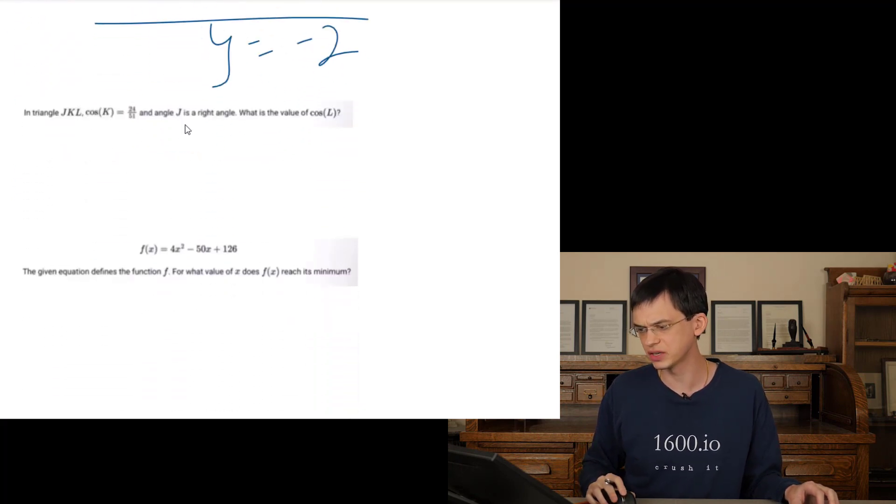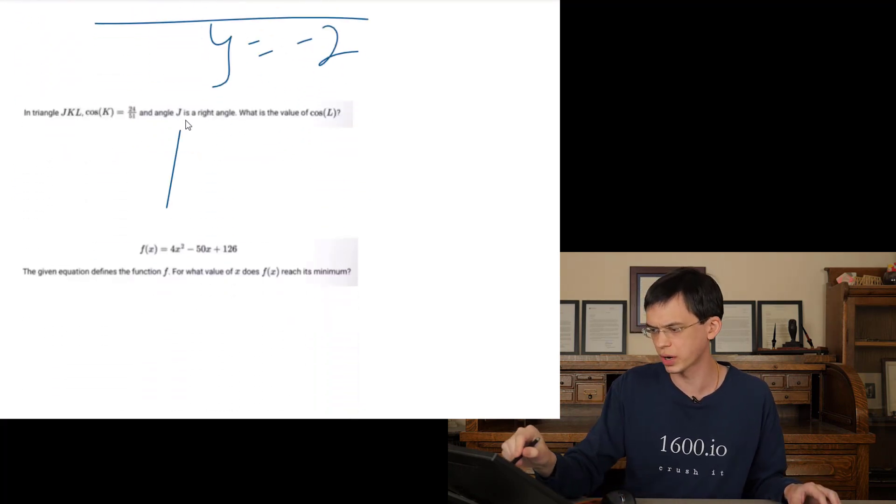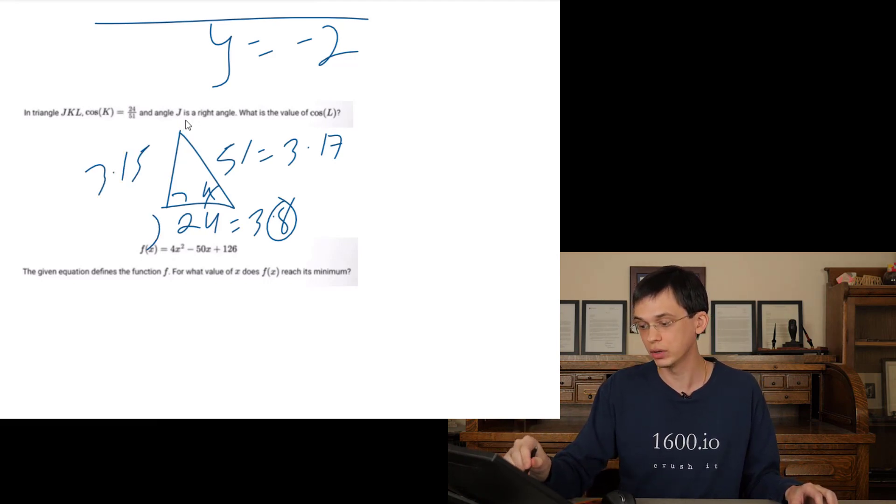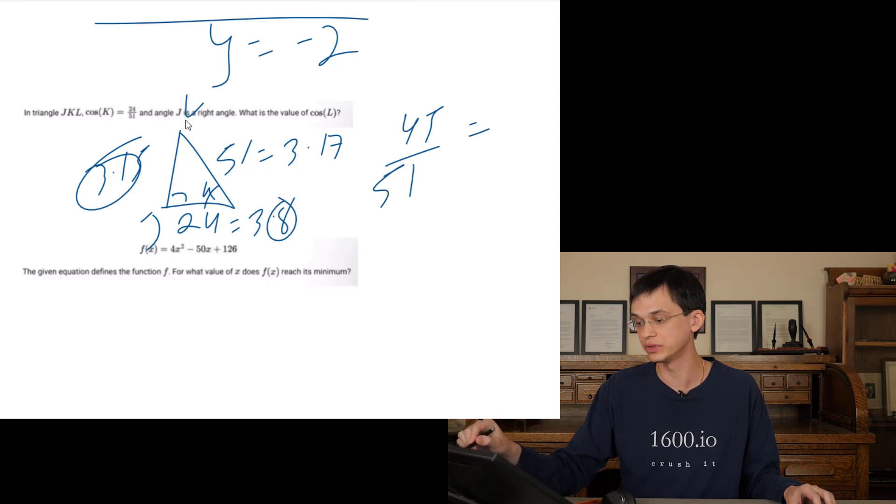In triangle J, K, L, cosine this equals this and this. What's the value of cosine L? So let's draw our right triangle. So if cosine of K, let's say this is K, is going to be adjacent over hypotenuse. So adjacent is 24 over hypotenuse is 51. Realize that 24 is 3 times 8. Realize that 51 is 3 times 17. So that means that this is actually an 8, 15, 17 right triangle. So this side is going to be 3 times 15 for 45. So when they're now asking what's the, J is the right angle. What's the value of cosine of L? Cosine again is adjacent over hypotenuse. So that's going to be equal to 45 over 51, which is equal to 15 over 17. We simplify it.